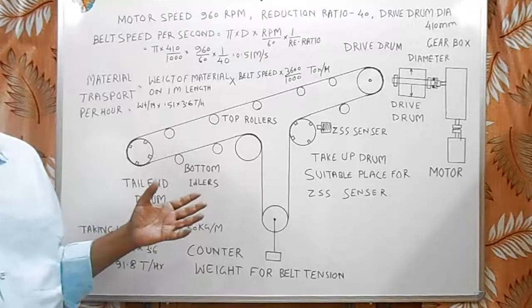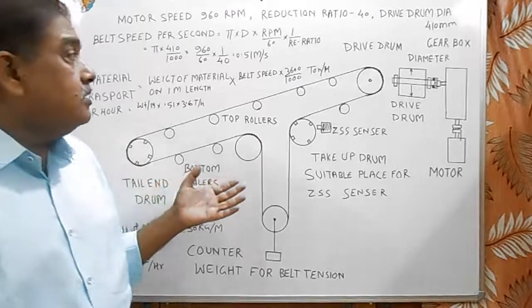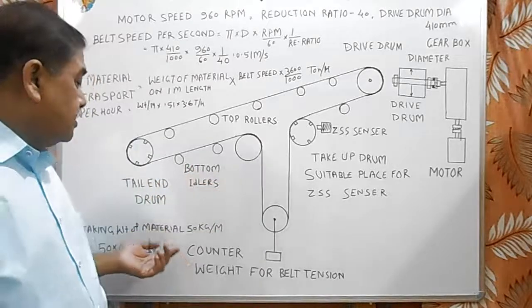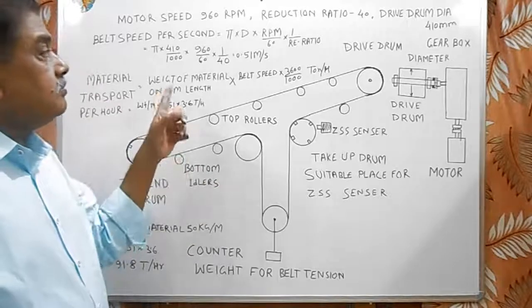So, for any belt conveyor, we can calculate the material transported per hour with this formula.